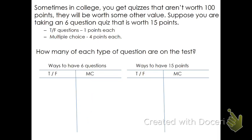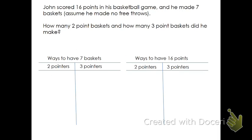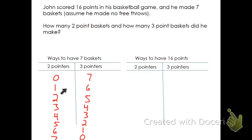Now let's look at another example to develop this intuitive idea of a system of equations. John scored 16 points in a basketball game and made seven baskets — no free throws, so they're all two-pointers and three-pointers. Let's look at all the ways to have seven baskets. Maybe he had seven three-pointers, or one two-pointer and six three-pointers, or two two-pointers and five three-pointers — all the way down to seven two-pointers and no threes.